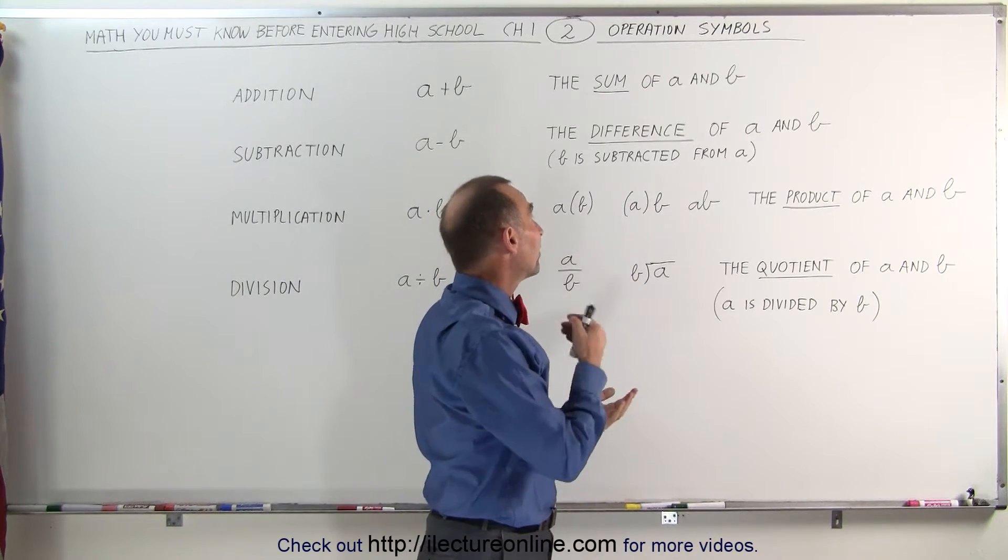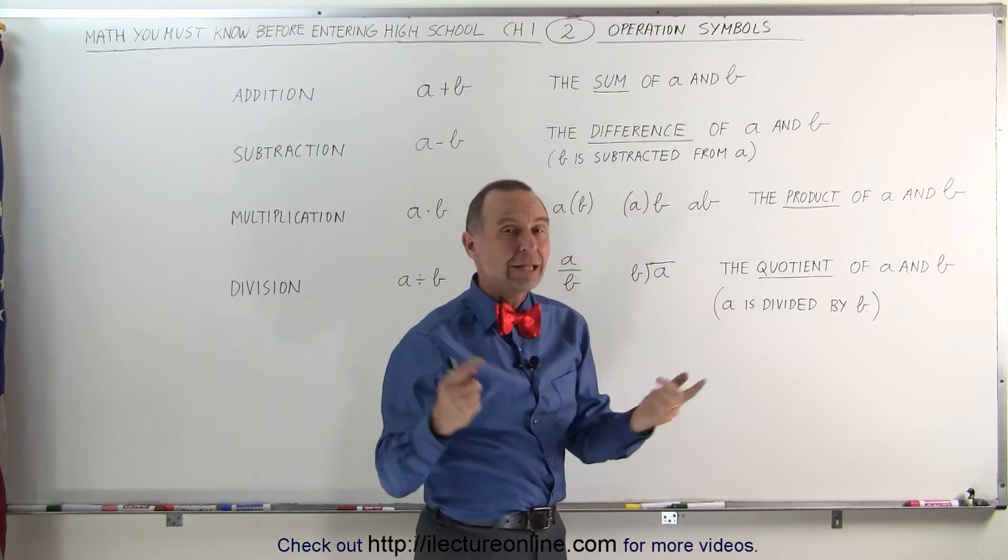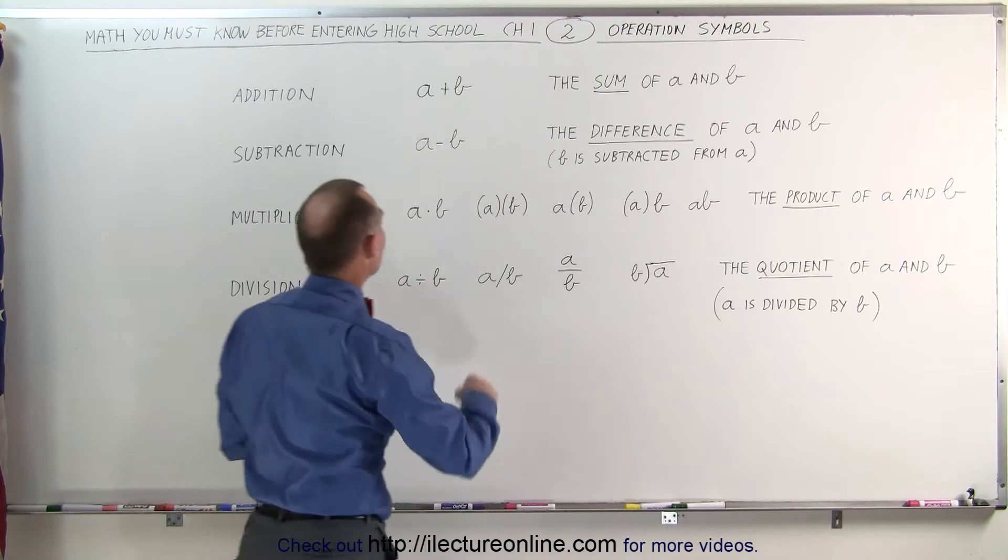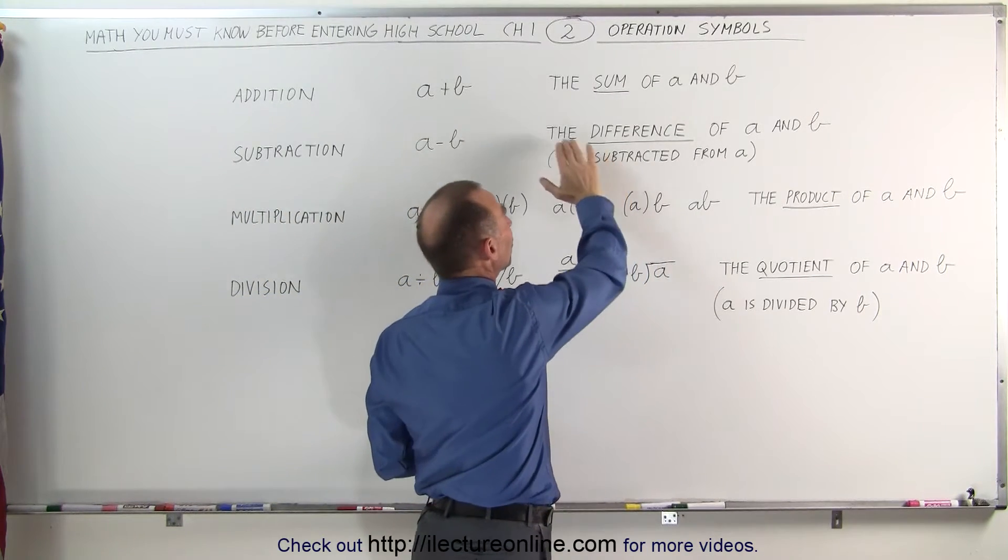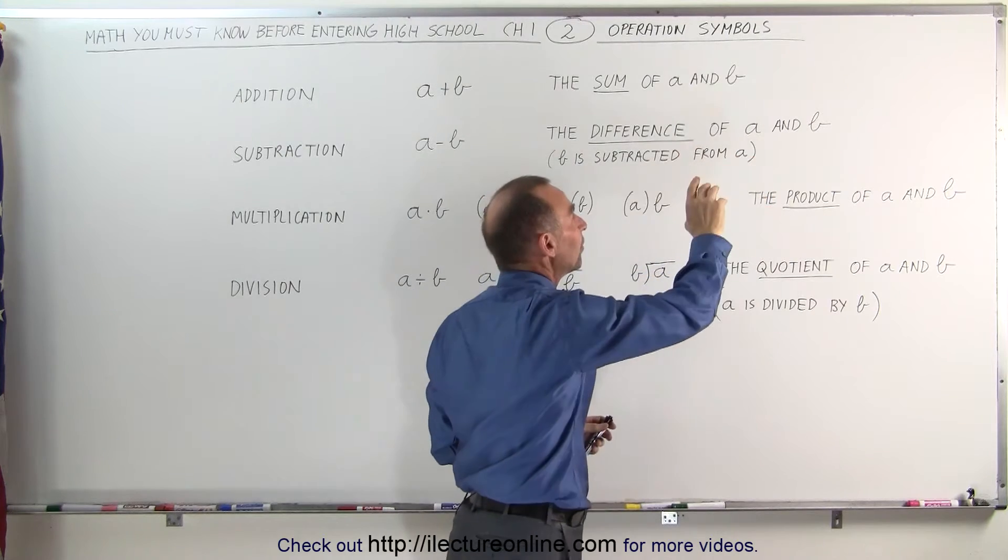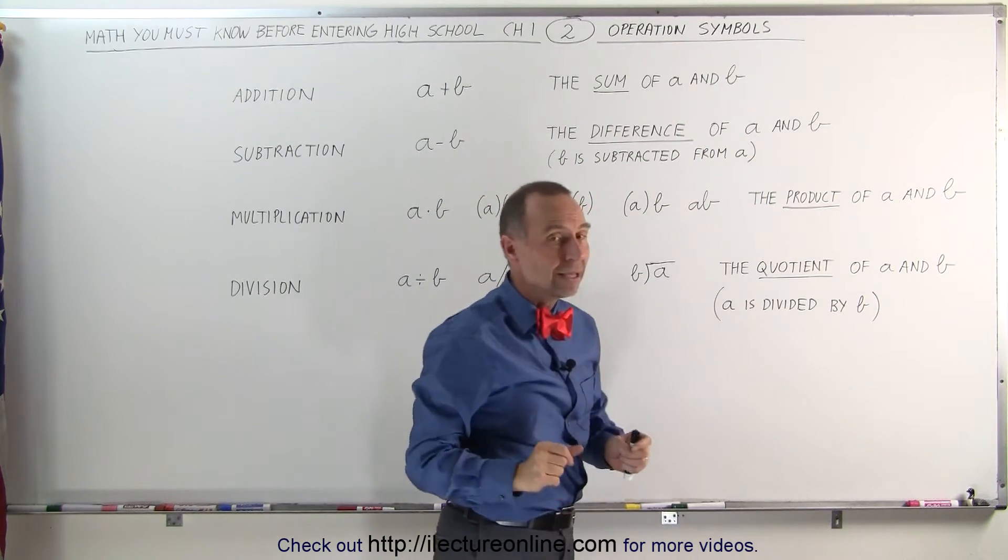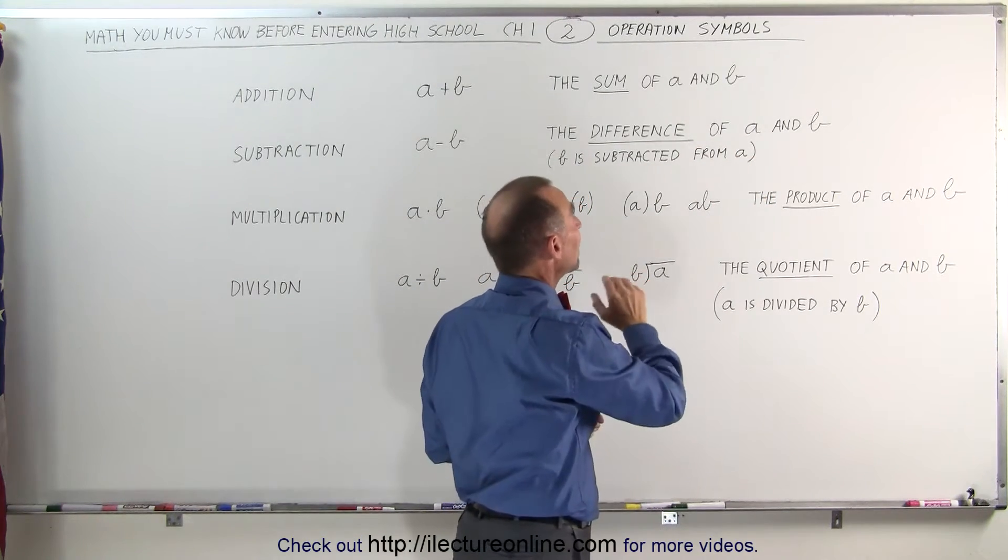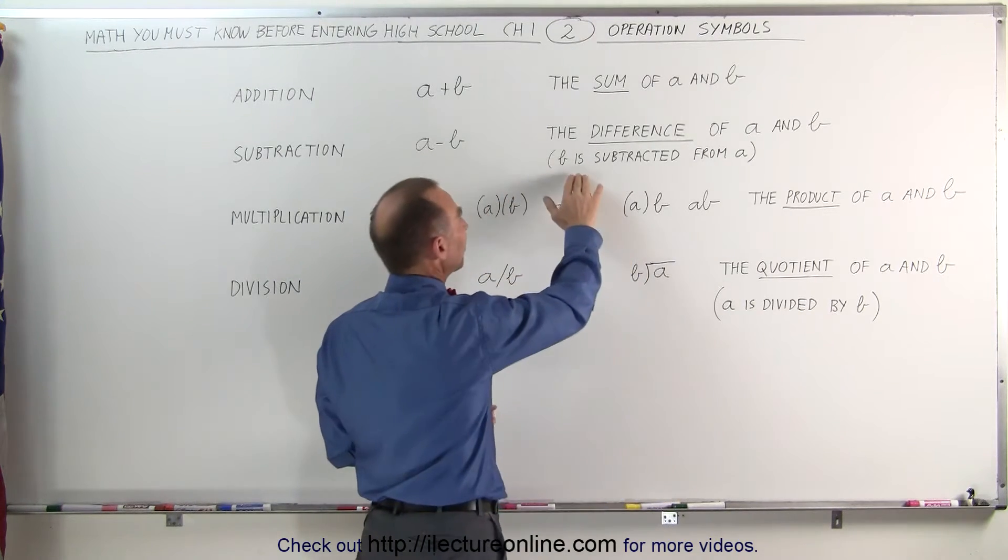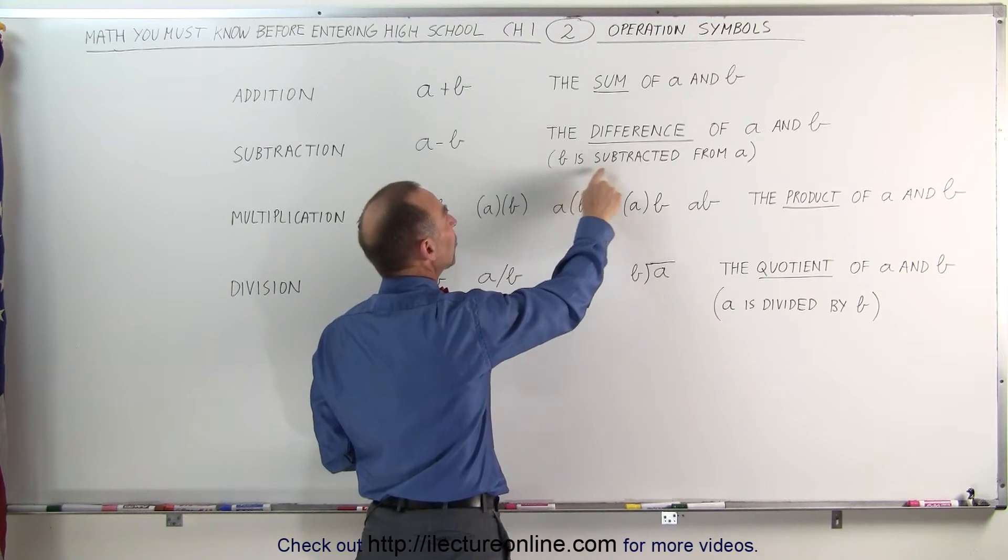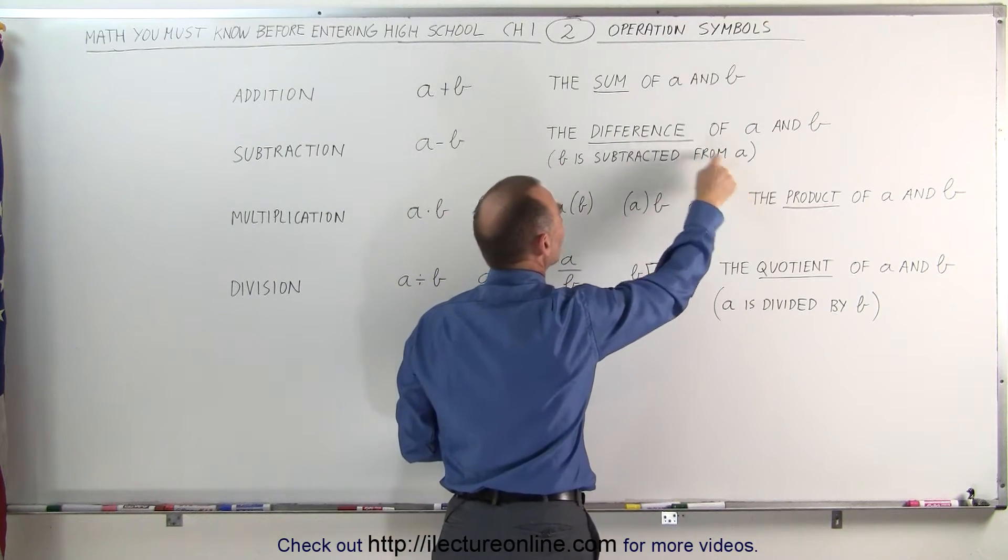What happens when you say the difference of b and a? Then you have to reverse the order, then it would be b minus a. So it's very important in how you say this. The difference of a and b means a minus b. If you say the difference of b and a that means b minus a. Another way of saying this is that b is subtracted from a and the result is the difference.